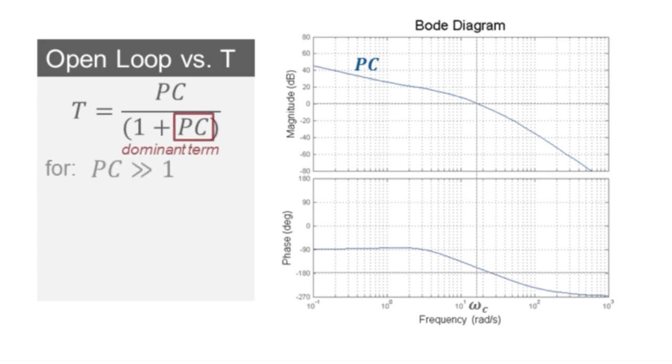If we look at the region way before the crossover frequency and the magnitude of the open-loop transfer function is much greater than 1 or 0 dBs on the plot, then PC will dominate the denominator and T will be approximately PC over PC or 1. So both the magnitude and the phase of T will stay at approximately 0 on the Bode plot.